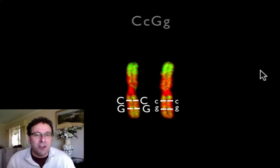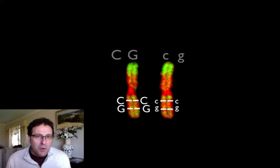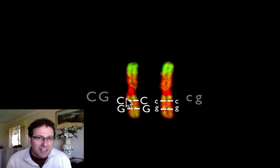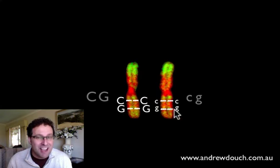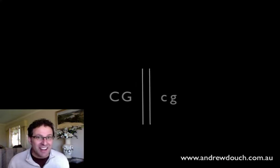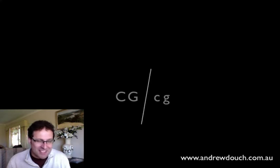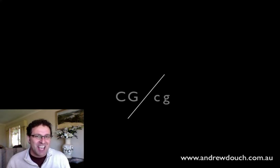Now that we've worked out that these genes are linked — because we didn't get a one to one to one to one ratio of four phenotype combinations, but instead mostly parental phenotypes with a few recombinant ones — we want to write the genotype to show that. With linked genes, instead of writing big C little c big G little g, which just tells us what alleles are there but not how they're linked, we write them like this: we put the big C and the big G together, and the little C and the little G together, because they're on the same chromosome. We replace our picture of chromosomes with a couple of lines combined into one line on a tilt, and that's how we write the genotype of a heterozygous mouse where big C and big G are on the same chromosome and are linked.